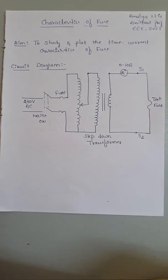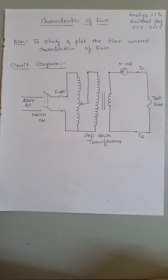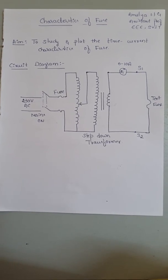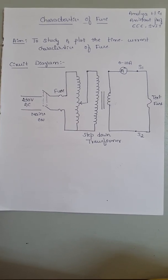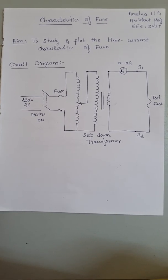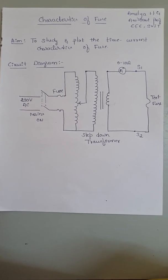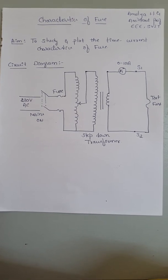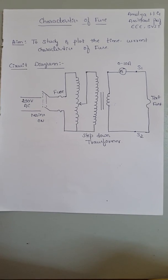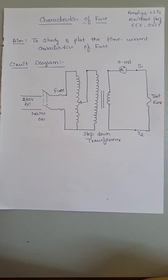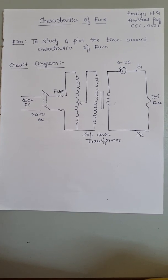Before going to the circuit diagram, we must know what a fuse is and what its characteristics are. A fuse is one of the protective devices used in a power system. It is a short piece of metal or fusing material connected in a circuit, which melts when a predetermined or excess current flows through it, thereby breaking the circuit from the excess current.